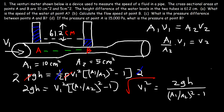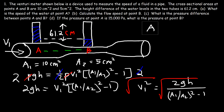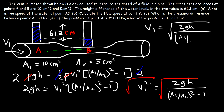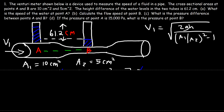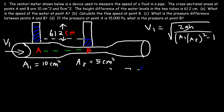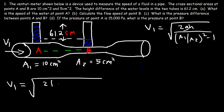Taking the square root of both sides, we have the equation: V1 = √(2gh / [(A1/A2)² - 1]). So the velocity at point A is the square root of 2gh divided by (A1/A2)² minus 1. Now let's plug in the values. The height difference must be in meters, so 61.2 centimeters divided by 100 gives 0.612 meters.